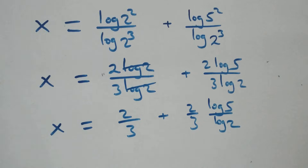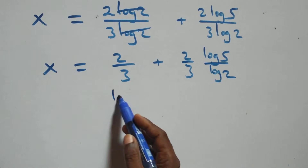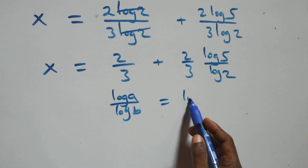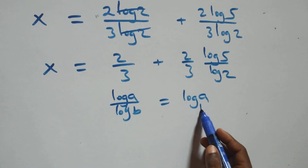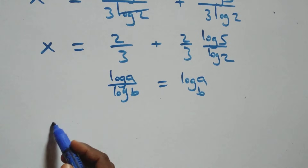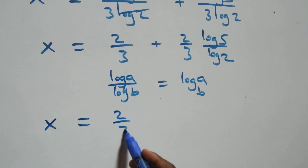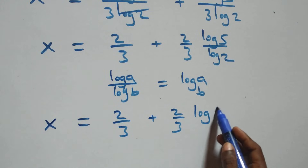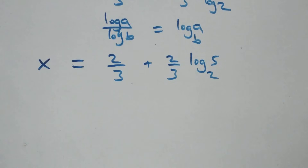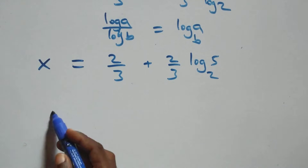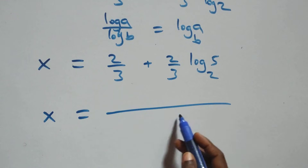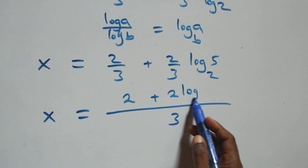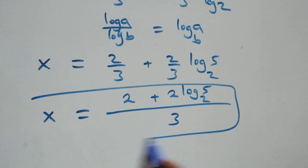Then we apply the change of base formula: log a over log b is the same thing as log a to base b. So all we have here becomes x equals to 2 over 3 plus 2 over 3 times log 5 base 2. We bring this together as one fraction and we have x equals to, since the denominator is 3, this becomes 2 plus 2 log 5 base 2 all over 3.